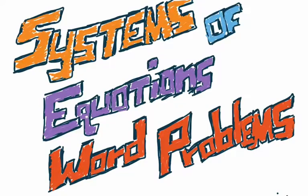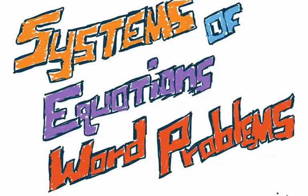Hey guys, I hope everybody is doing alright. We're going to talk about systems of equations and word problems. We've been talking about systems of equations — remember that a system of equations is when you have more than one equation. So we've been looking at a system of equations where we have two equations and we graph them, and we try to solve the system of equations. What we're going to look at here is word problems that involve systems of equations.